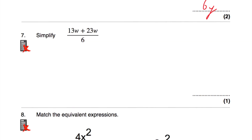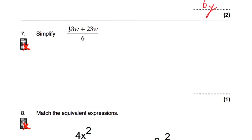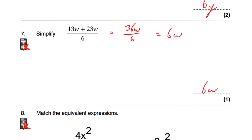Question number 7: simplify (13w + 23w) divided by 6. First, simplify the numerator. 13w plus 23w — 13 plus 23 is 36, so that's 36w. Then divide by 6: 36 divided by 6 is 6, so 36w divided by 6 is 6w. The answer is 6w.